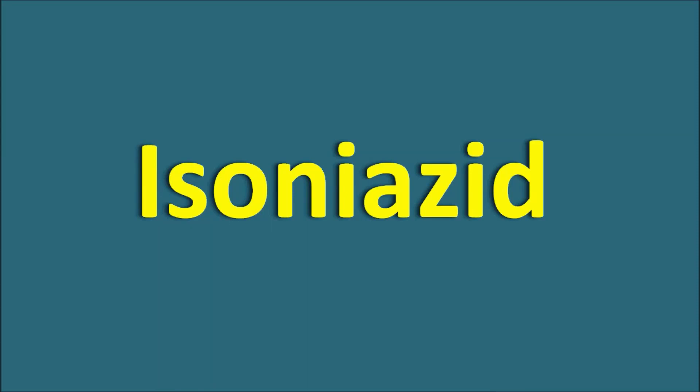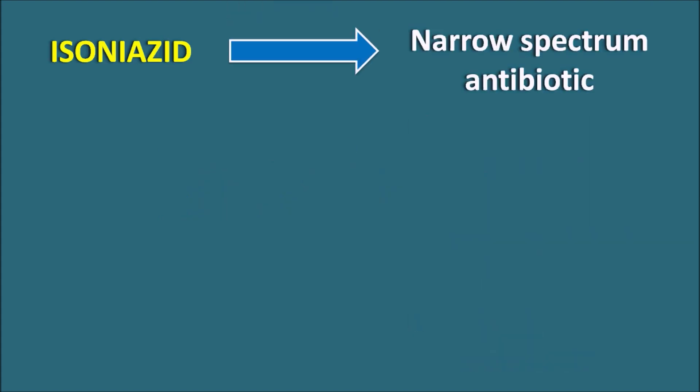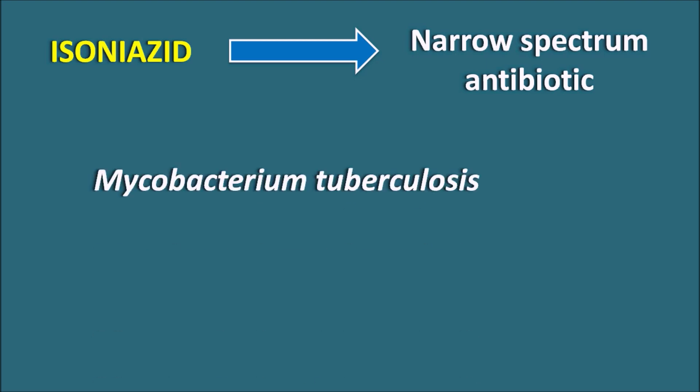Today in this video we are going to discuss about Isoniazid. Isoniazid is one of the narrow spectrum antibiotics and this drug is particularly used in the treatment of mycobacterial infections. But within the mycobacteria it is not useful for all types — this drug is specifically used in mycobacterium tuberculosis. It is not useful in the treatment of mycobacterium leprae, which causes leprosy. That's why it is called a narrow spectrum antibiotic.